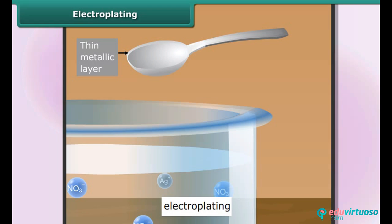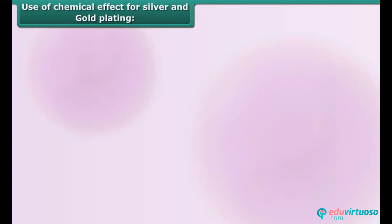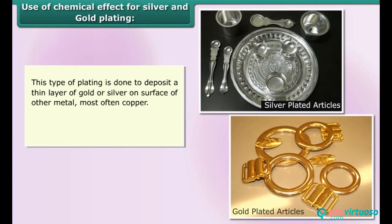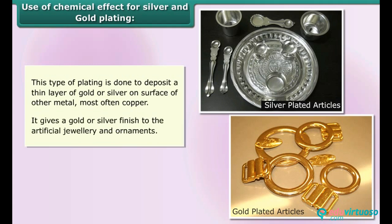Use of chemical effect for silver and gold plating: this type of plating is done to deposit a thin layer of gold or silver on the surface of another metal, most often copper. It gives a gold or silver finish to artificial jewelry and ornaments. Silver plated articles and gold plated articles are common examples.